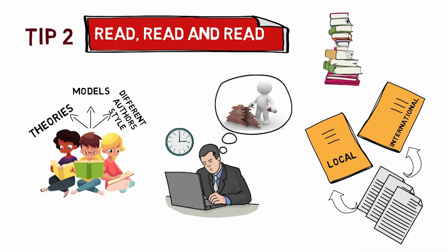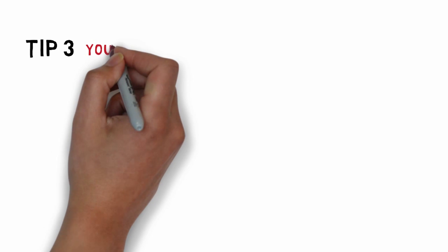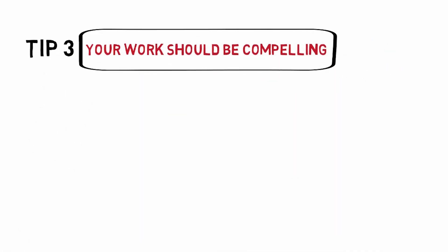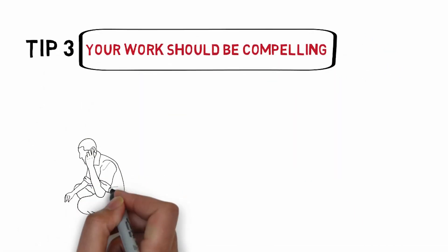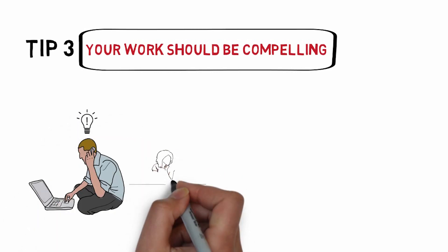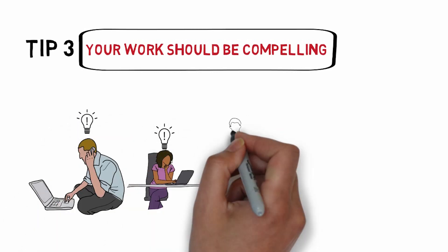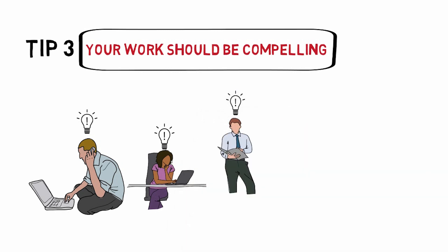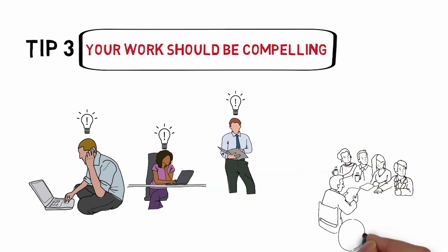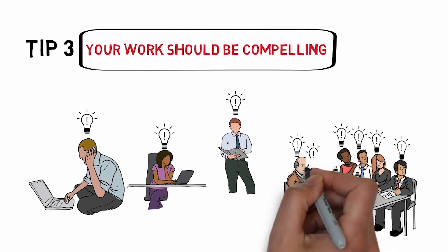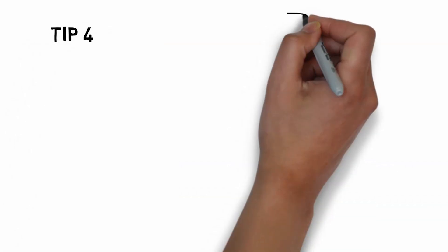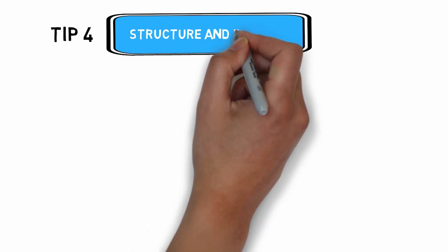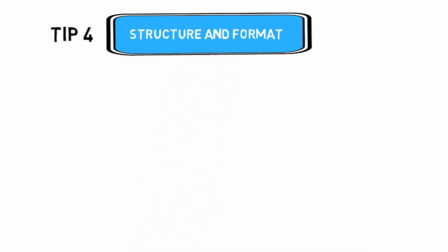The third point is that your work should be compelling, which means read your study carefully — is it adding something to the knowledge of your peers, colleagues, and professionals? This simply means check if there is any audience for your paper. The fourth most important tip is to structure and format according to the journal you are targeting.